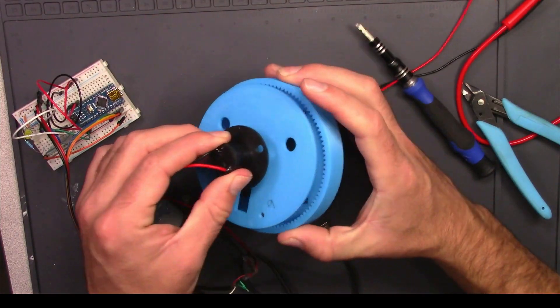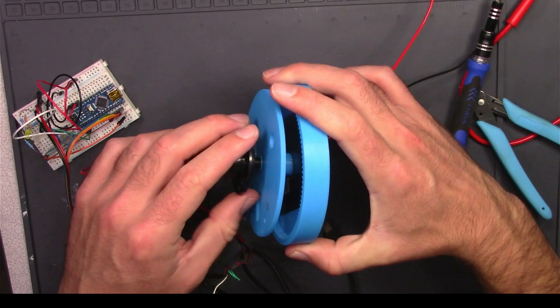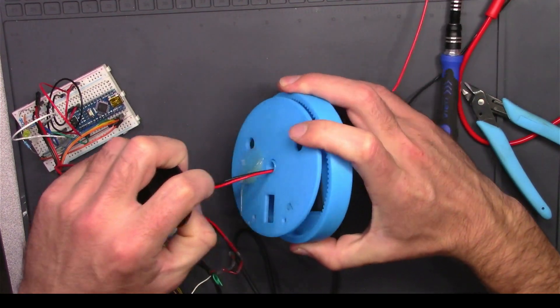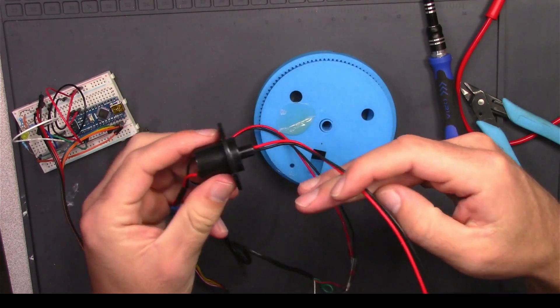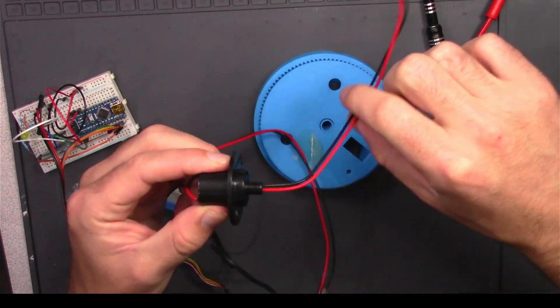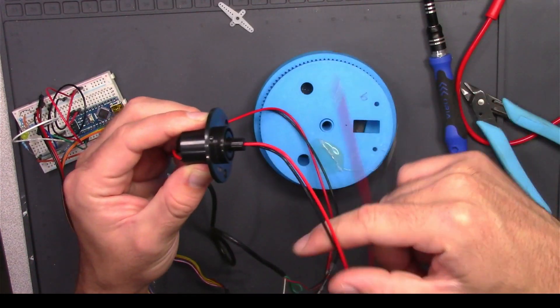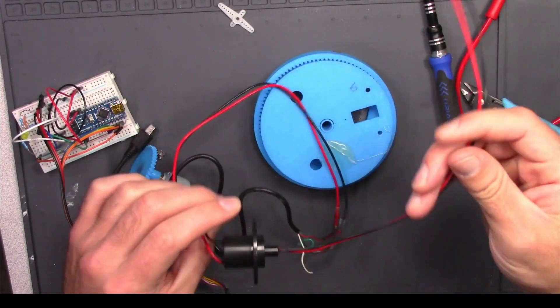This thing right in the middle of the plate is an electrical slip ring. It's critical for Susan's function because what the slip ring does is it allows one side of the wires to spin indefinitely while keeping the connection.